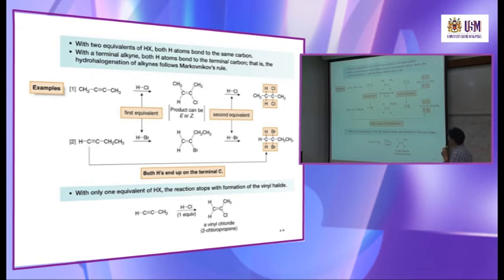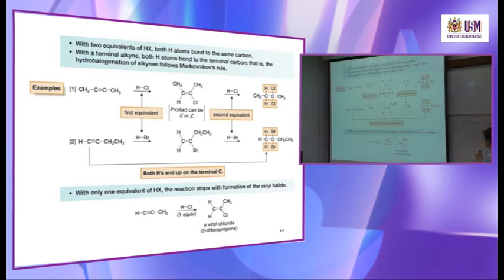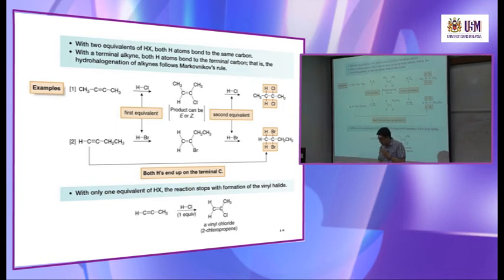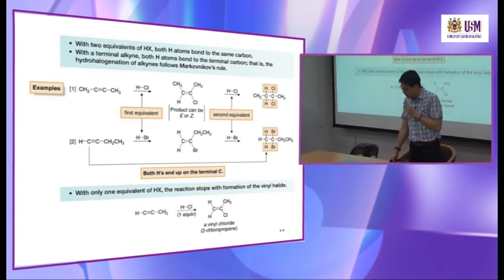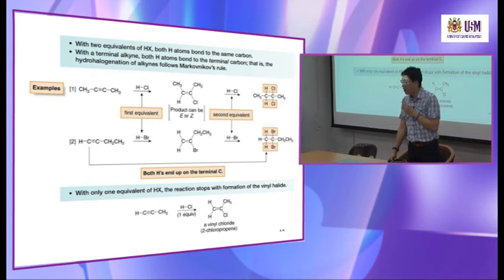For the terminal alkyne reacting with HX: this is not symmetric, so H must be added to the terminal carbon. After the first HBr addition, the second HBr is added — both H atoms end up on the terminal carbon. With two equivalents of HX, both H atoms bond to the same carbon, and for the terminal alkyne, both H atoms bond to the terminal carbon, following Markovnikov's rules.